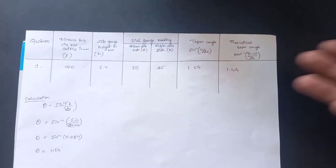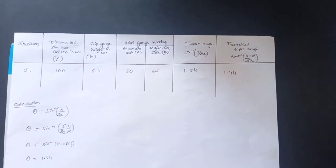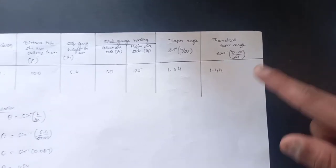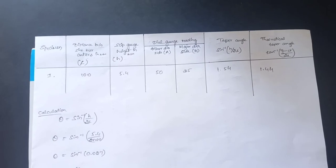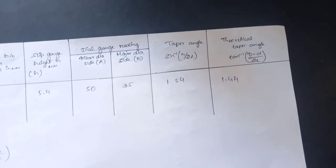So this is the tabular column for the experiment, so here are the values for that. From starting we have got the theoretical taper angle as 1.44.